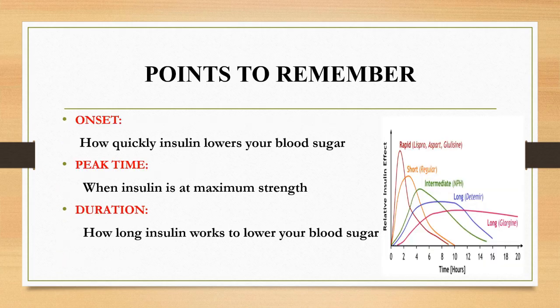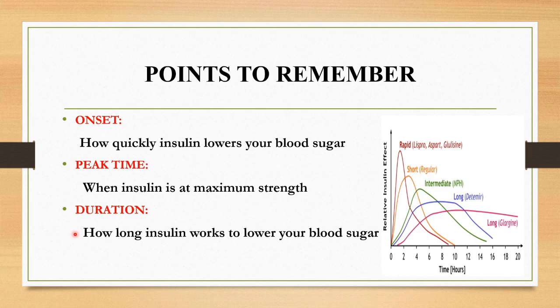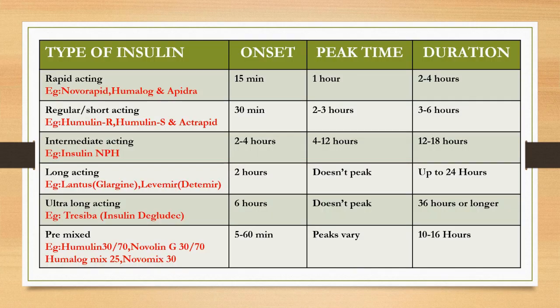We should know about these three things whenever we are administering injectable insulin. The first one is onset — that means how quickly insulin lowers your blood sugar. The second one is peak time — that means when insulin is at maximum strength. The third one is duration — that means how long insulin works to lower your blood sugar. Now you got a clear idea about onset, peak time, and duration. Let's see about that in detail.